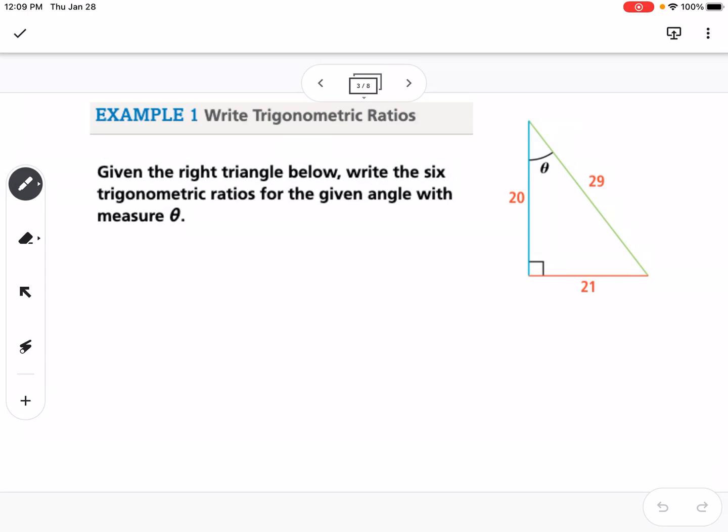Our first example says to write the six trigonometric ratios for the given angle with measure theta. We're going to start with sine, cosine, tangent. Here's theta, so it shows us there's our angle theta. Sine would be opposite over hypotenuse, so that would be 21 over 29.